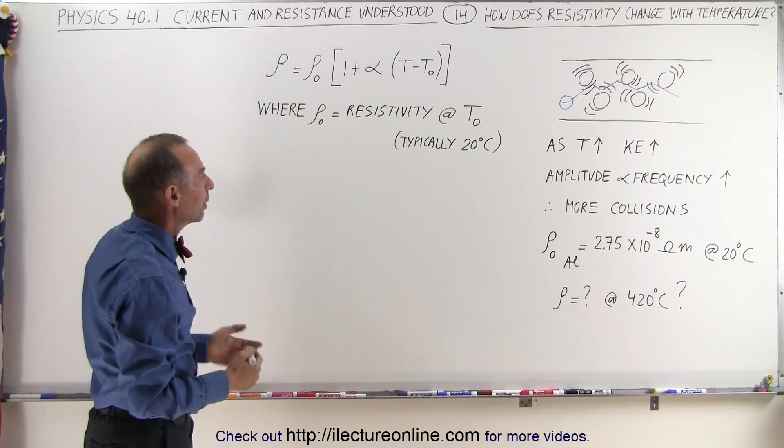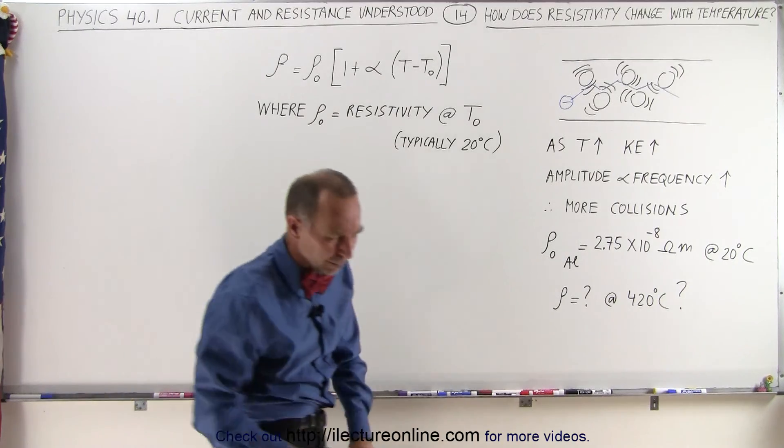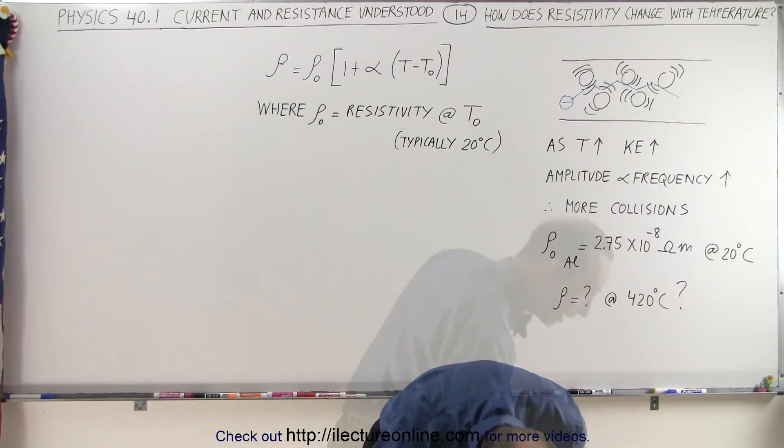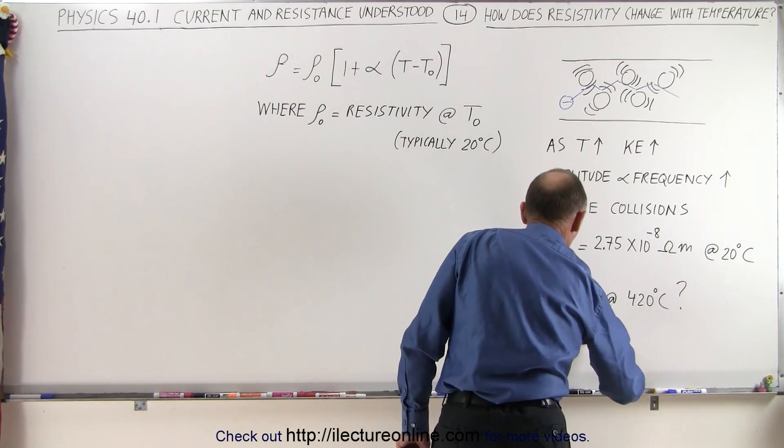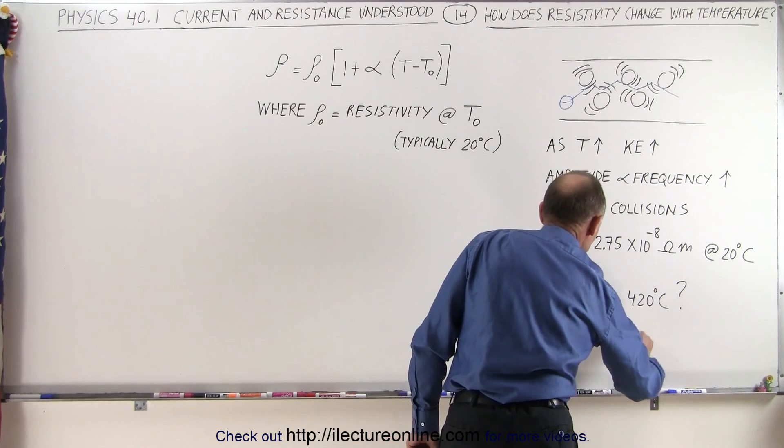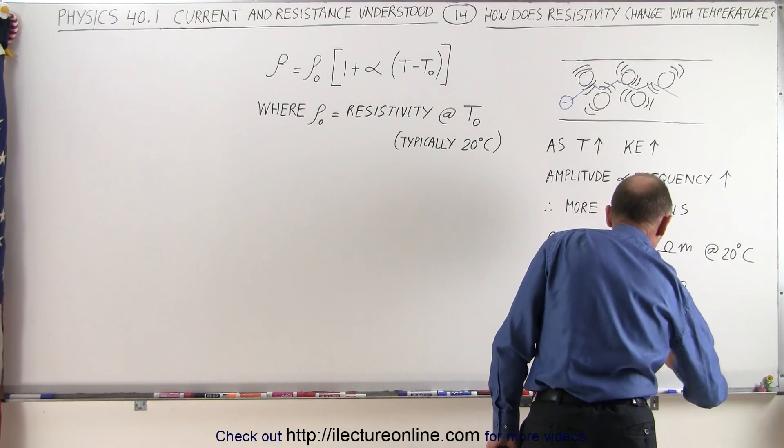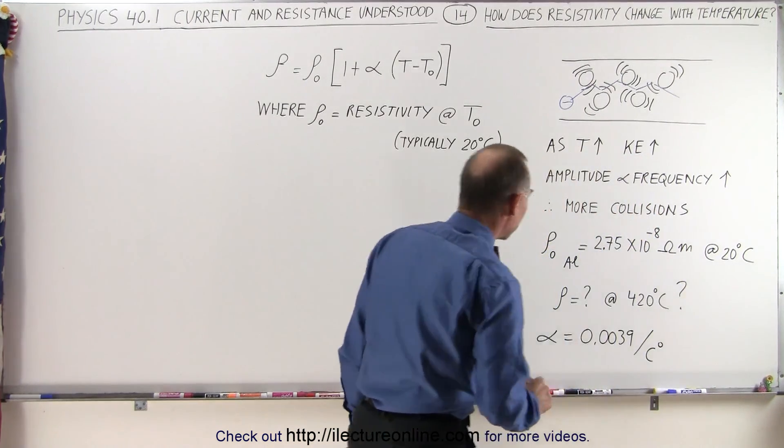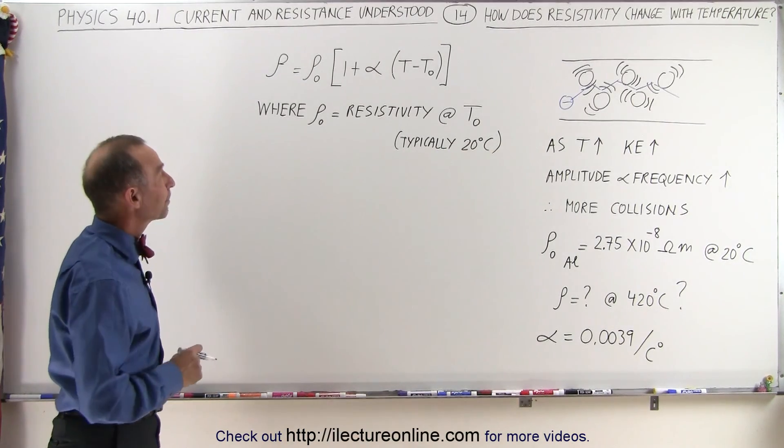I guess we would need that number, and I didn't write it down anywhere, so let me go look it up. I have it here somewhere. Alpha is equal to 0.0039, and that would be per centigrade degree, or per Kelvin degree, and that's how the resistivity would change for every degree centigrade.